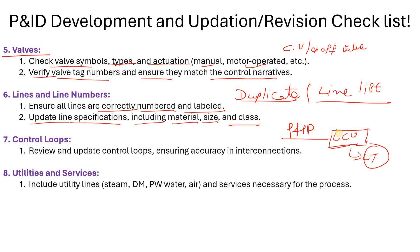Then utilities and services — please include all utility lines, for example your steam line, DM water line, process water line, demineralized water line, instrument air line, and process air line. Whatever services are necessary for the process, include them and also prepare P&IDs for the utilities as well as the distribution P&ID.